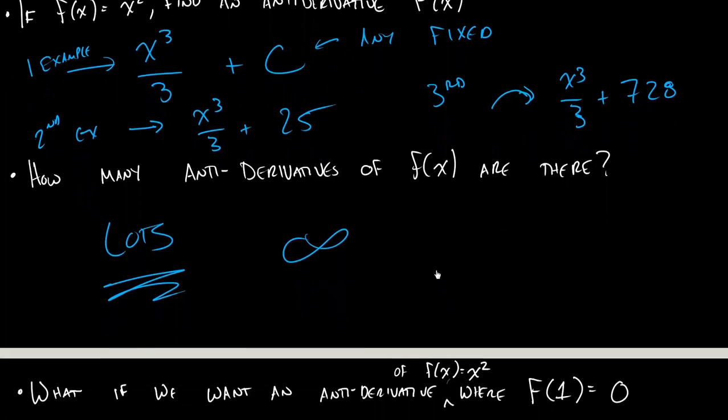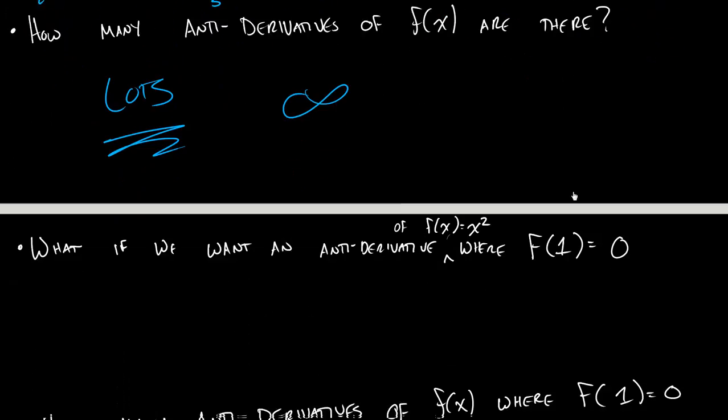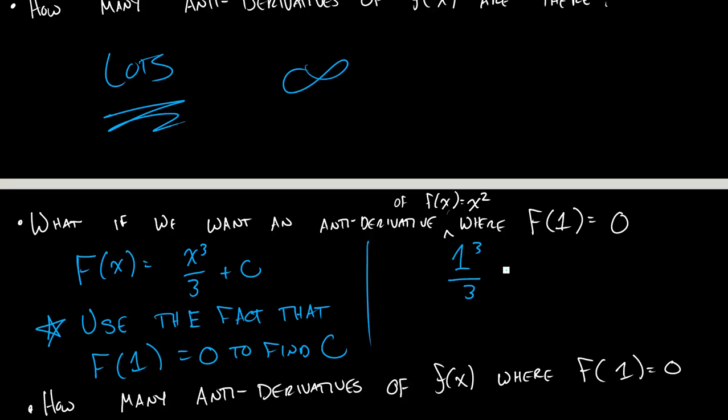But what we're going to start looking at is they'll say, I don't want just the antiderivative of x squared. I want the antiderivative where F of 1 is equal to 0. So how are we going to deal with that? The first thing you'll have to figure out is that big F of x is equal to x cubed over 3 plus c. The big idea is when we get a fact like this, it's going to lock down our c. So if I plug in F of 1, I should get 0 out. So 1 cubed over 3 plus c should equal 0.